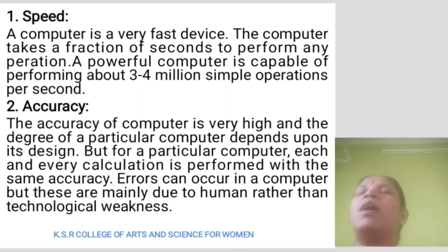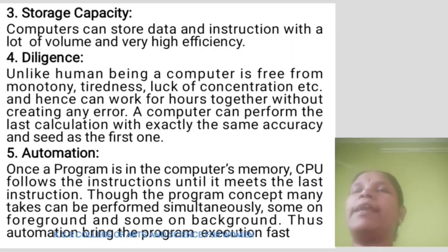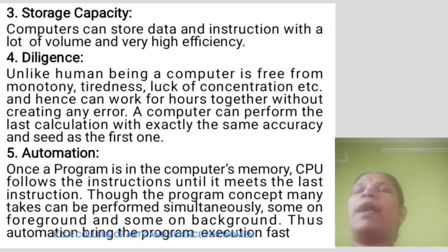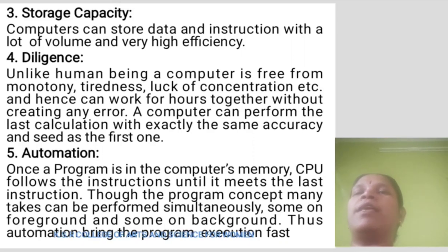Errors can occur in a computer but these are mainly due to human error rather than technological weakness. Storage Capacity: Computers can store data and instructions with a large volume and very high efficiency. Diligence: Unlike a human being, a computer is free from monotony, tiredness, and lack of concentration, and hence can work for hours together without creating any error. A computer can perform the last calculation with exactly the same accuracy as the first one. Automation: Once a program is in the computer's memory, the CPU follows the instructions until it meets the last instruction.